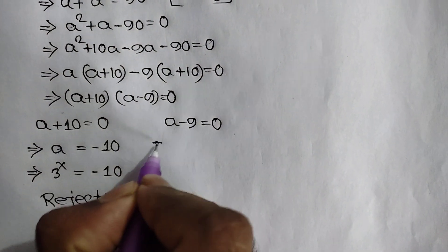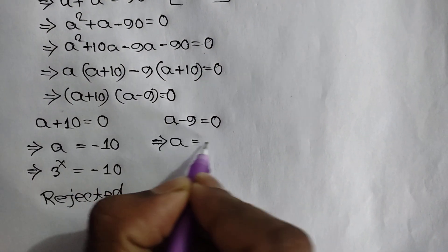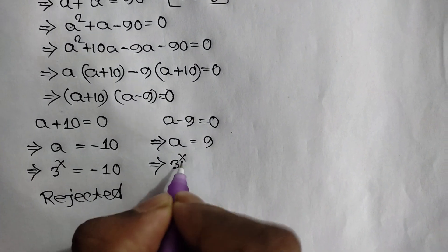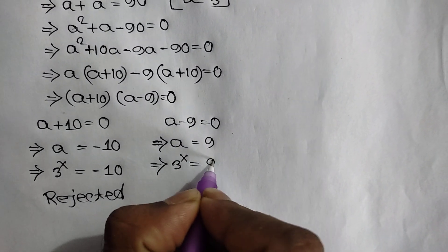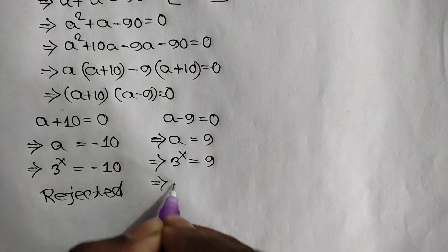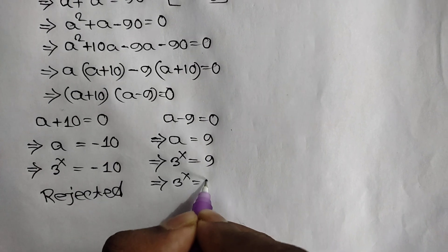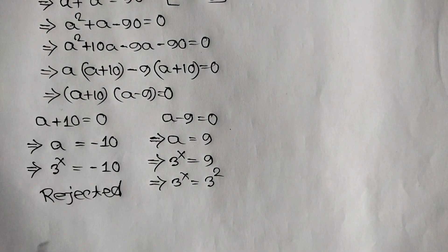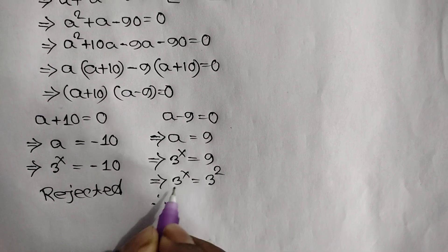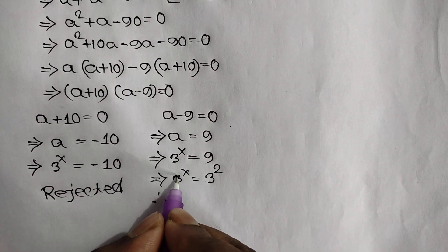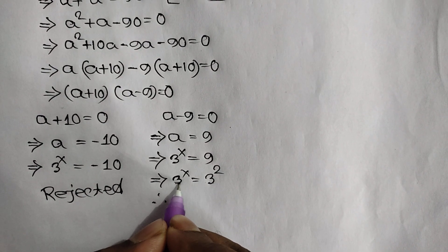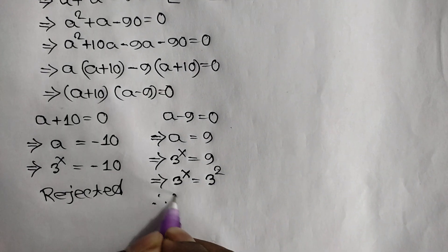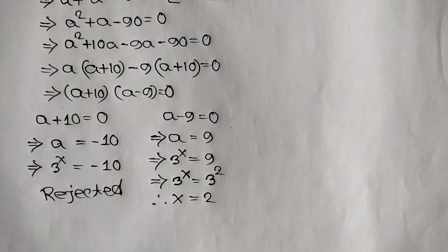Now a equals 9, and since a equals 3 to the power x, we have 3 to the power x equals 9. Or, 3 to the power x equals 3 squared, because 3 squared is the same as 9. Since the bases are the same, the powers must be equal, so x equals 2.